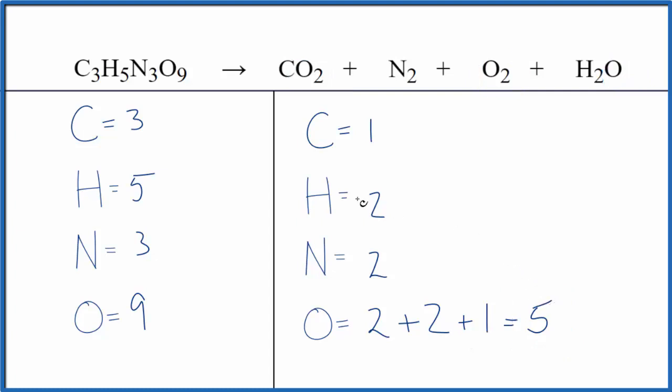Once we've counted the atoms up, we can try to start balancing this equation. When I see the five and the three and the three here and the nine as well, I'd like to get these to be even numbers. That's a good place to start for me. So I'm going to try that. Let's put a two here. Now I need to multiply all of these by two. I think that'll make it easier to balance.